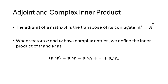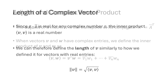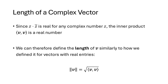When v and w are vectors with complex entries, we expand our definition of inner product. We write the inner product of v and w using angle bracket notation as v* times w — that's the adjoint of v, which is the transpose of v as a row vector containing the complex conjugates of the entries of v — giving v₁-bar times w₁ plus v₂-bar times w₂ plus ... plus vₙ-bar times wₙ. Since z times z-bar is real for any complex number z, the inner product of v with itself is a real number, and we can therefore define the length of v as the square root of the inner product of v with itself.